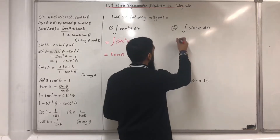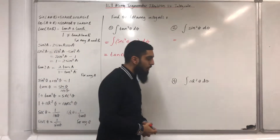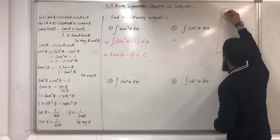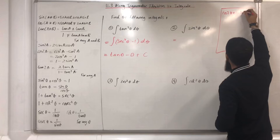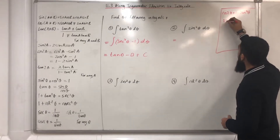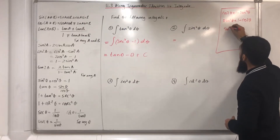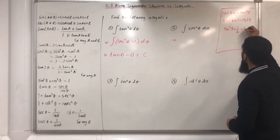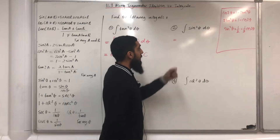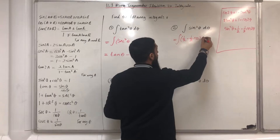Question number two: I want to integrate sin squared theta d theta. I can't integrate this at the moment, but I can use the double angle formula for cos to rewrite sin squared theta. The one I'm going to use is cos 2 theta equals 1 minus 2 sin squared theta. I want to make sin squared theta the subject: 2 sin squared theta equals 1 minus cos 2 theta, therefore sin squared theta equals one half minus one half cos 2 theta. So this integral is the same as the integral of one half minus one half cos 2 theta d theta.